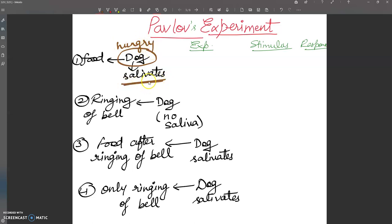Then salivation occurs in the dog. This means food is an unconditioned reflex. A hungry dog is brought here. If we talk about the stimulus, food is an unconditioned stimulus.